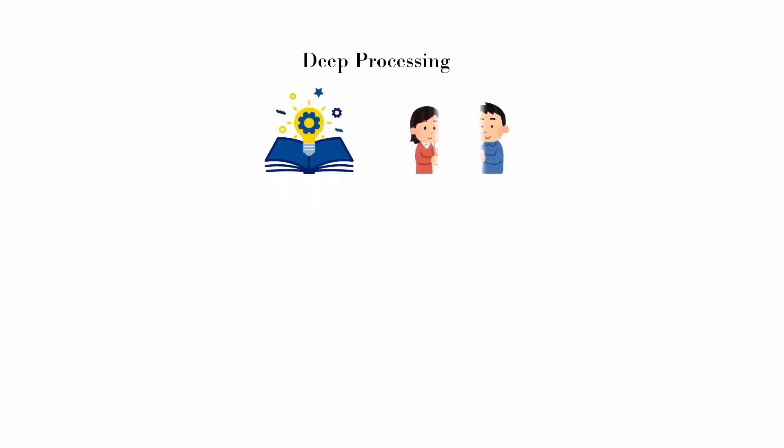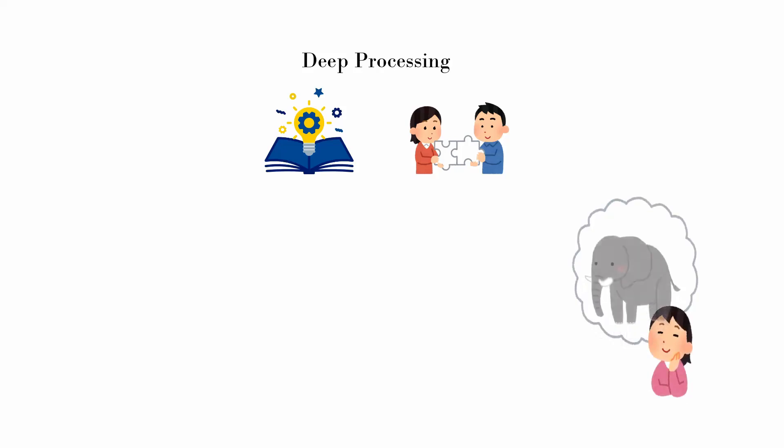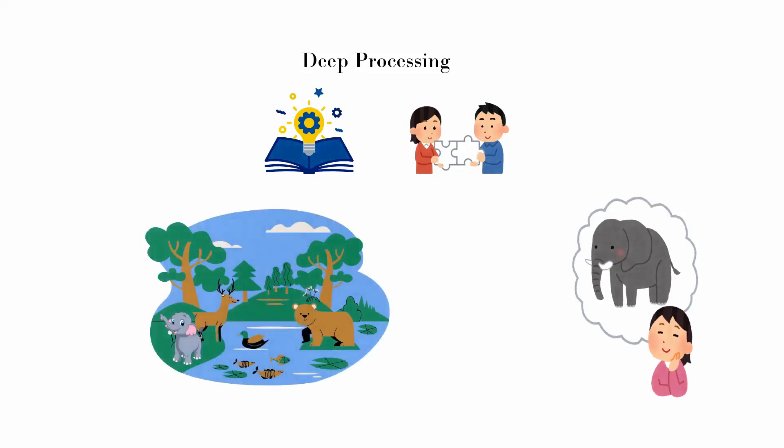In contrast, deep processing involves understanding the underlying meaning and connections of the information — just like logical processing, which is effective for long-term retention and recall. For example, when you hear the word 'elephant,' you not only recognize what the word means and what the animal looks like, but you might also remember a childhood story about an elephant. Here you are engaged in deep processing.